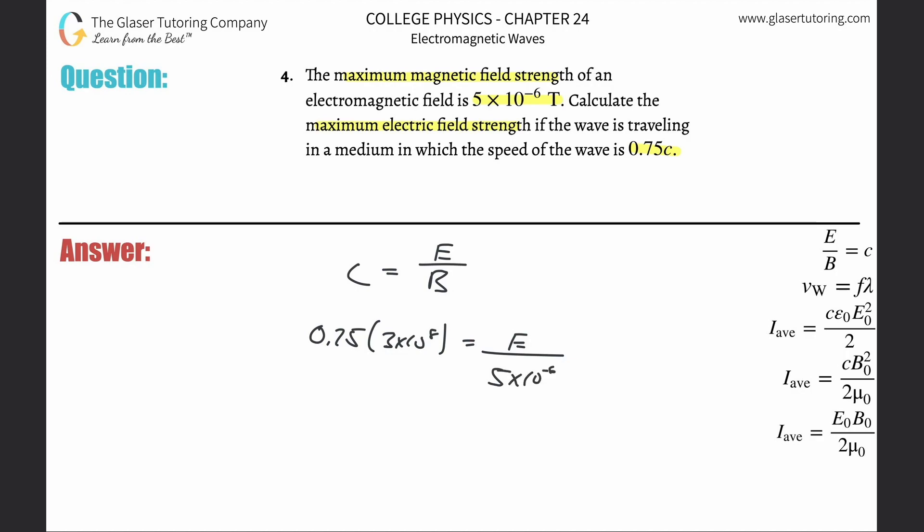All we now simply need to do is multiply these values. Let's see what we get. So 0.75 times three times ten to the eight times five times ten to the minus six, and we get a value of about 1.13.